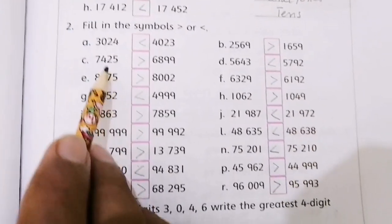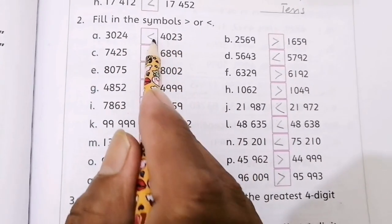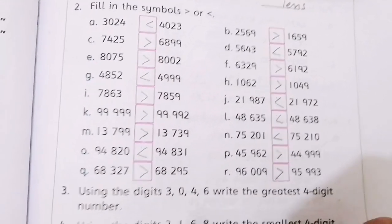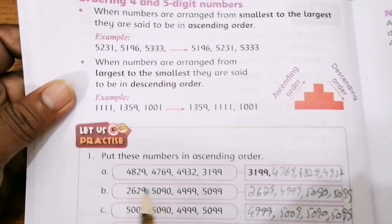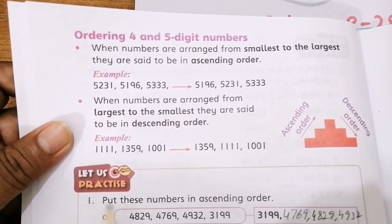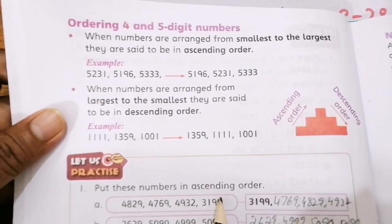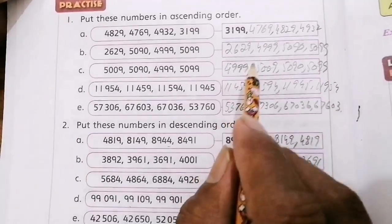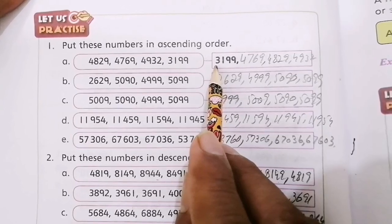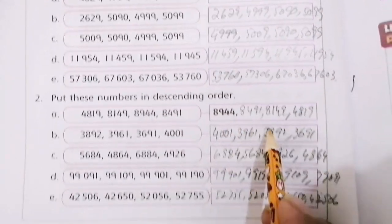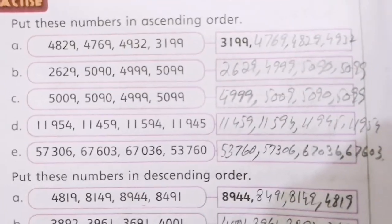Here we also have 4 digit numbers and we have to show them with less than or greater than signs. I have solved the whole thing. Here is the concept of 4 and 5 digit numbers, so we can also see ascending order and descending order.